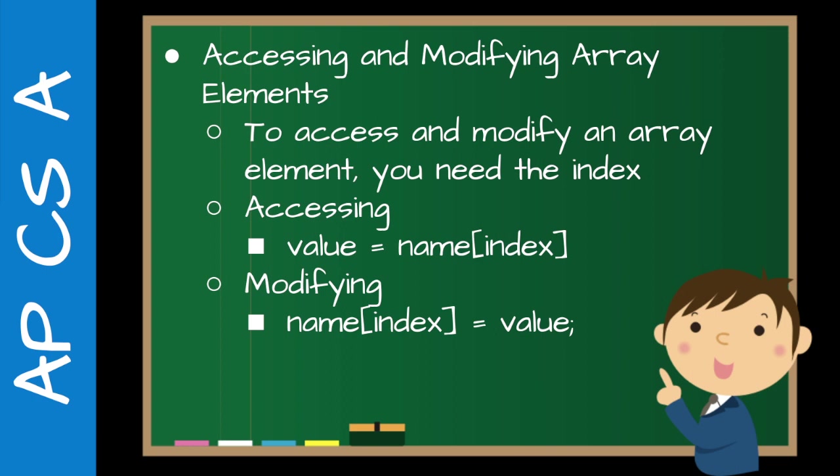So accessing and modifying array elements: to access or modify an array element, you need the index — zero through length minus one. To access: `value = name[index]`. To modify: `name[index] = newValue`. I use 'value' here, but it could also be an object. Typically with arrays you'll see integers and doubles, but you can also use reference types.